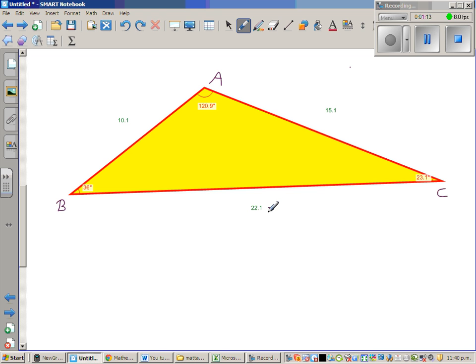22.1 is, say, A. B, if this is B, this is lowercase b. And if this is angle C, this is C. Here, the print is small. So, I'll rewrite A is 22.1. B is 15.1. And C is 10.1 units, whatever that unit is.